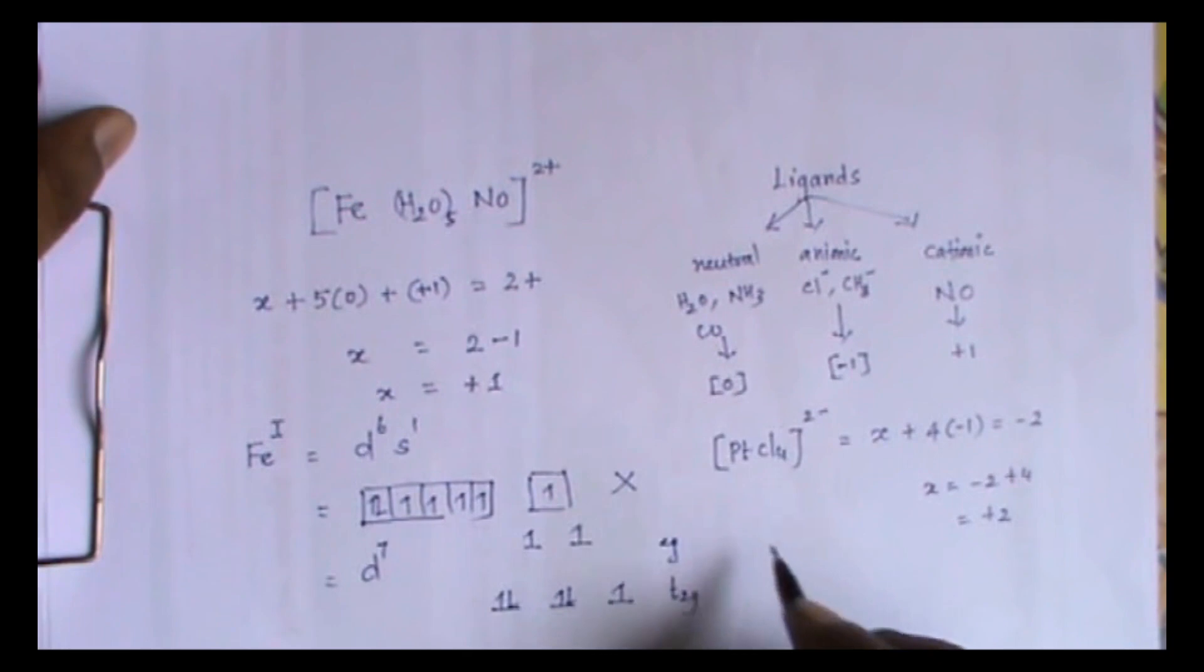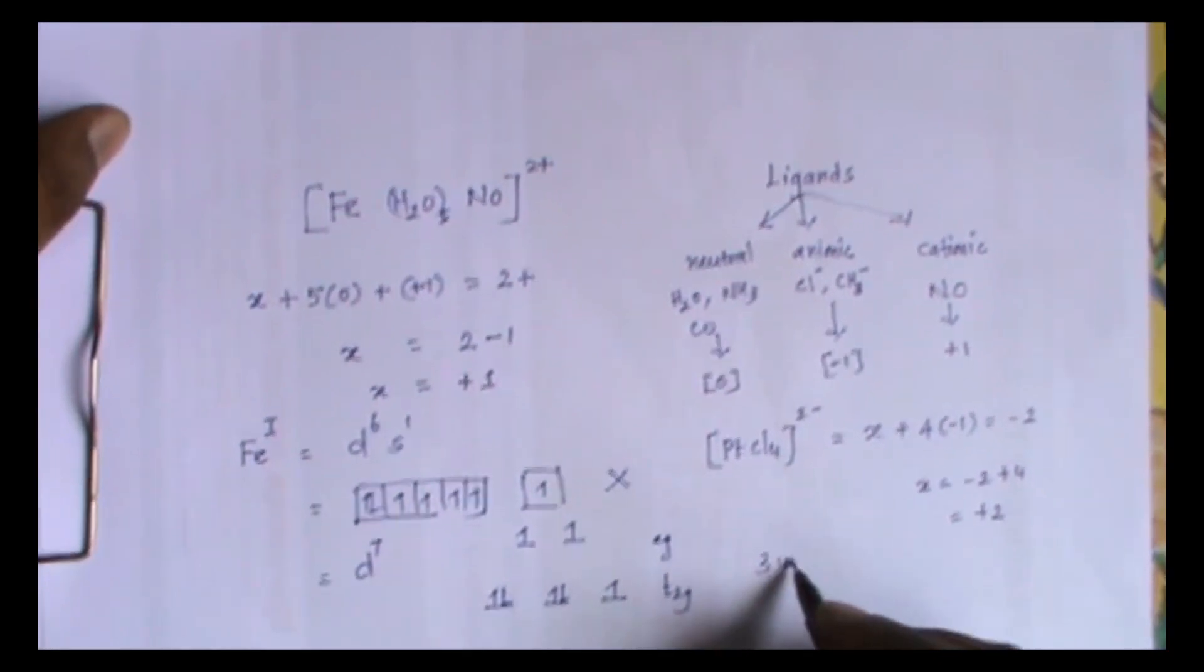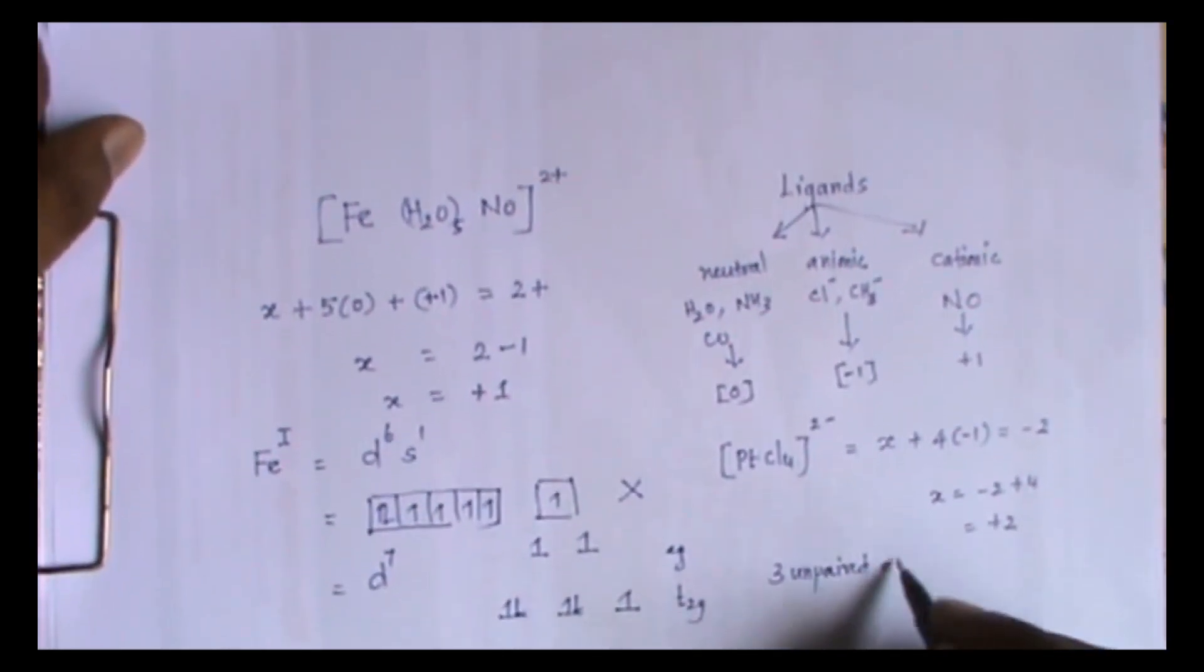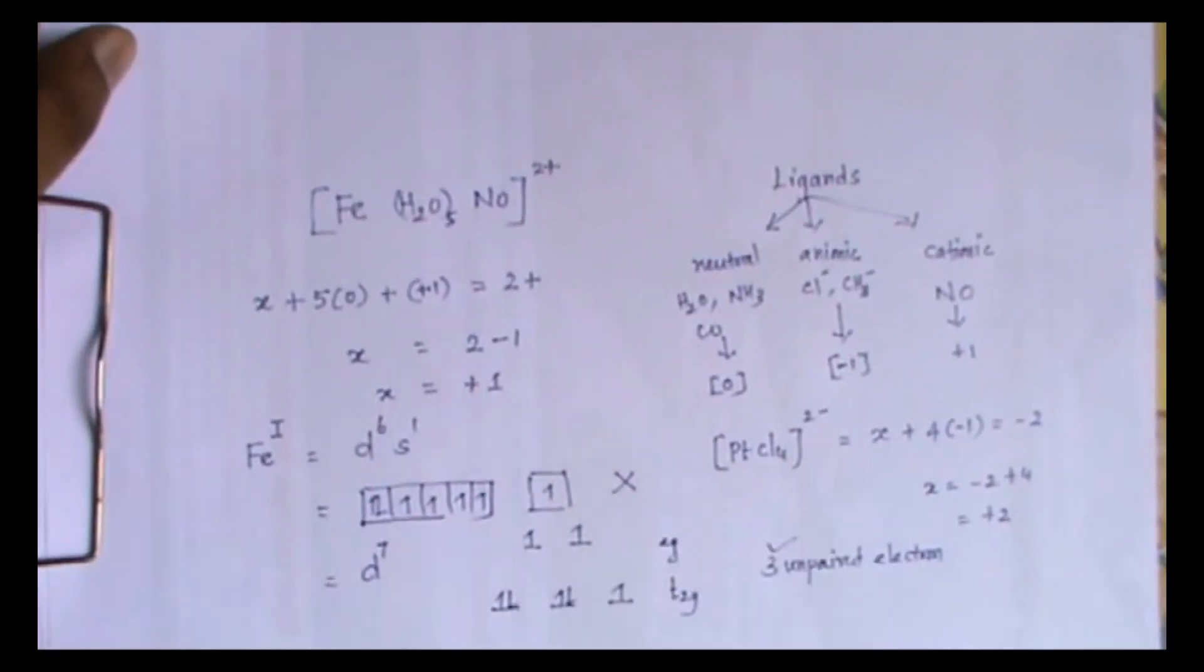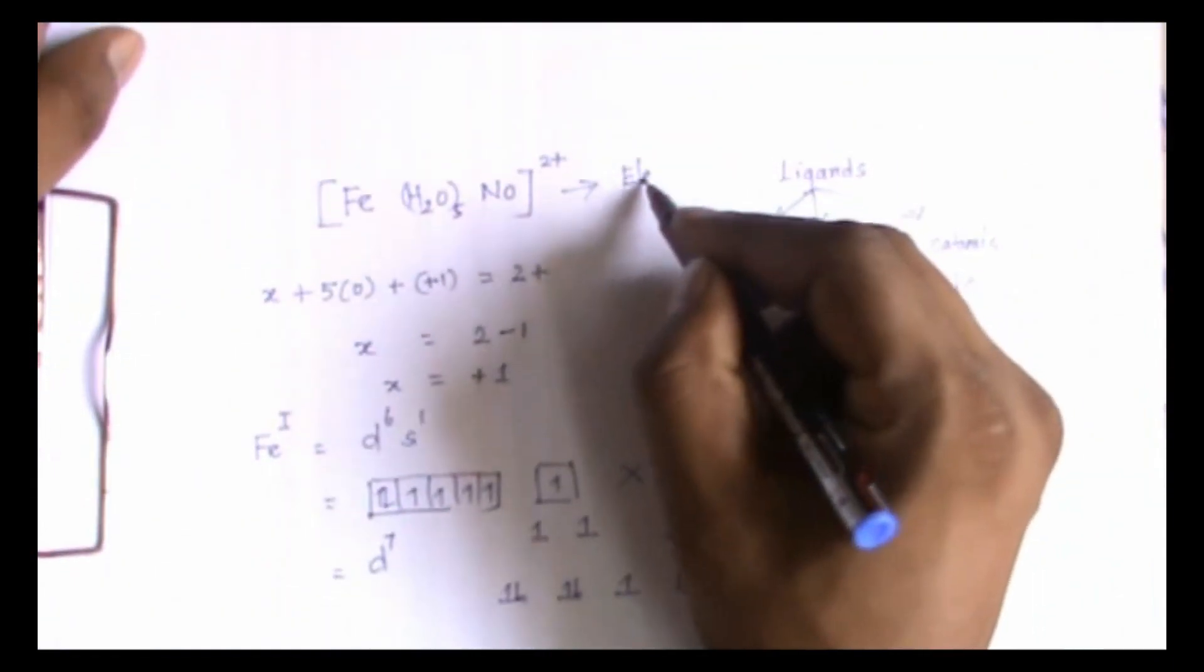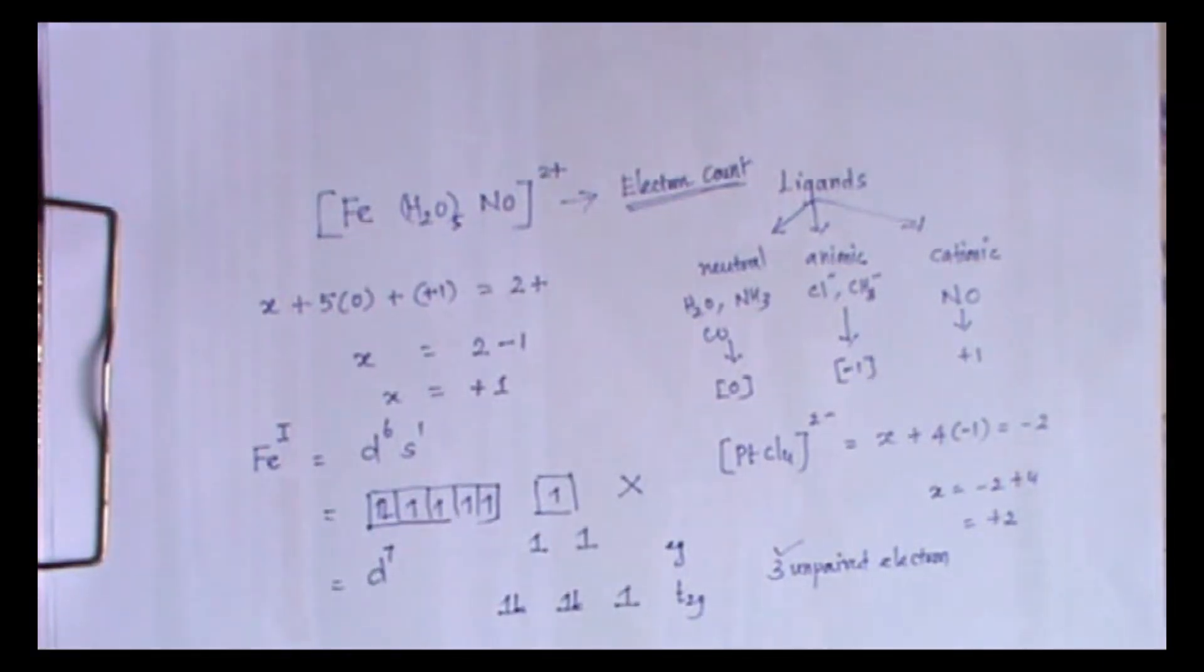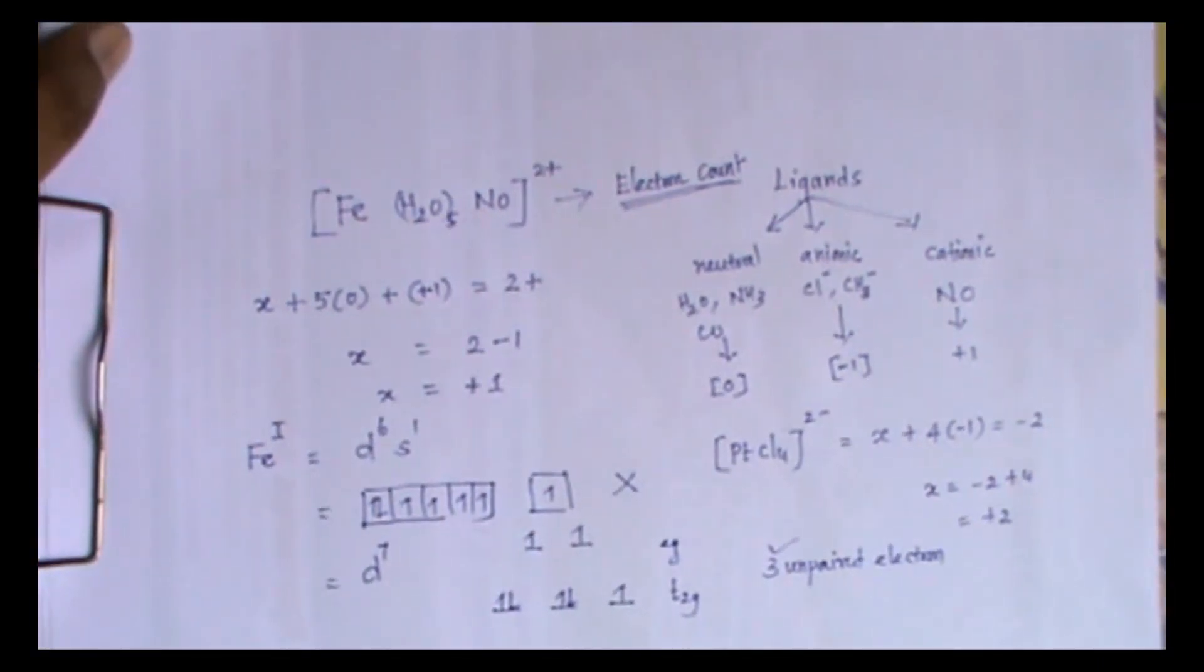Now I have only 3 unpaired electrons, so the correct answer is 3. Try to find out the electron count for this species. Question may be asked based on that also. In fact it is a tricky question. Try to find out, okay.